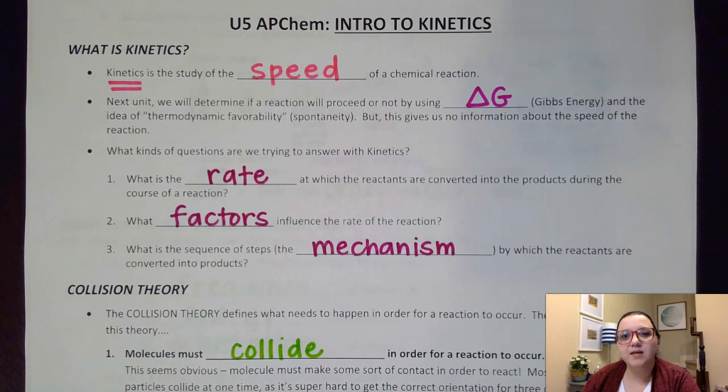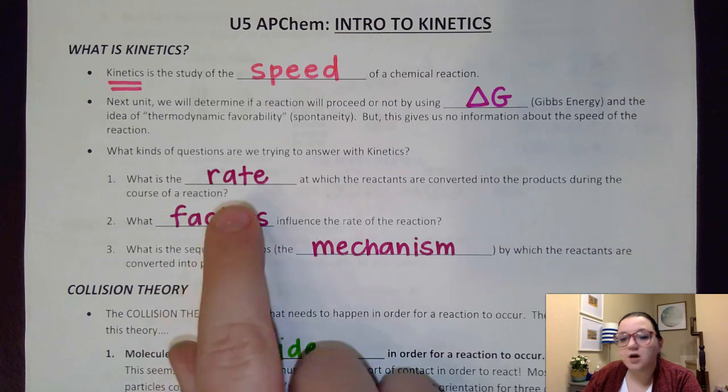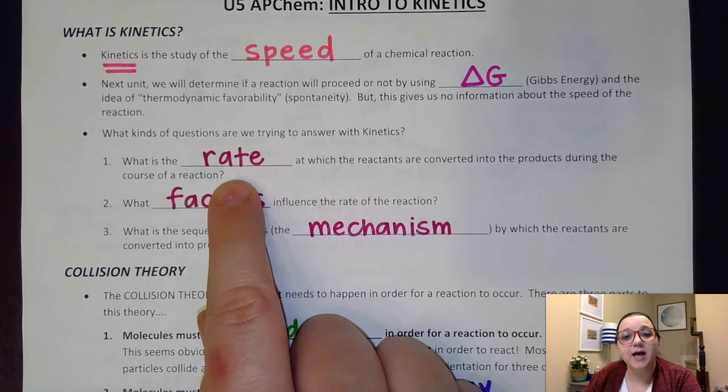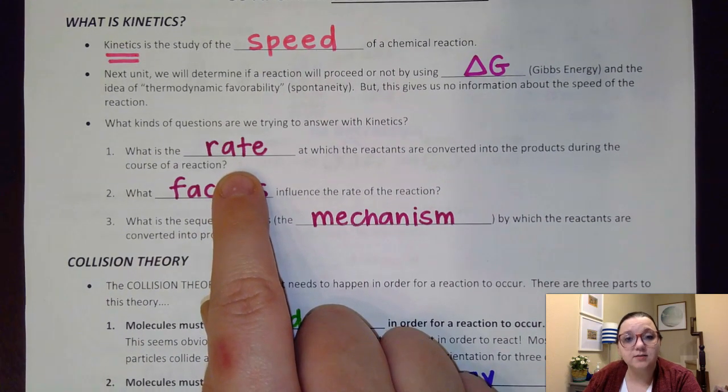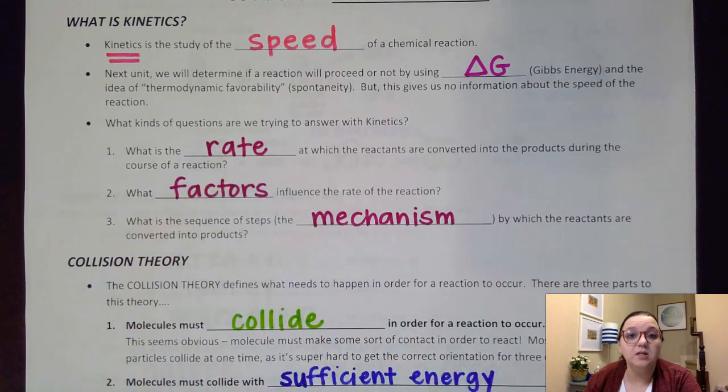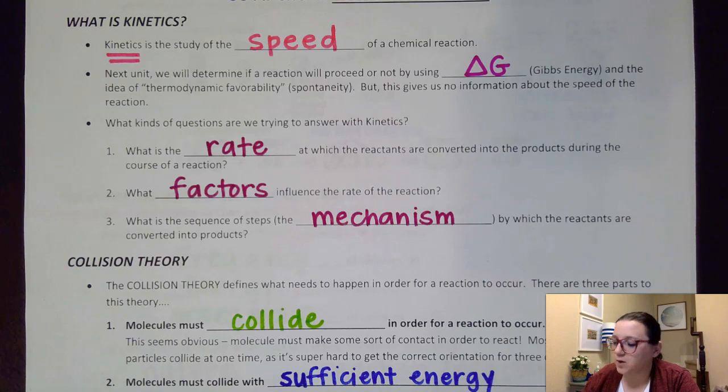So there's three key questions that we're going to try to answer during the course of this unit. First off, what is the rate at which the reactants are converted into products? Basically the speed of the reaction. There's various ways that we can calculate that, so we'll talk about all kinds of different mathematical processes.